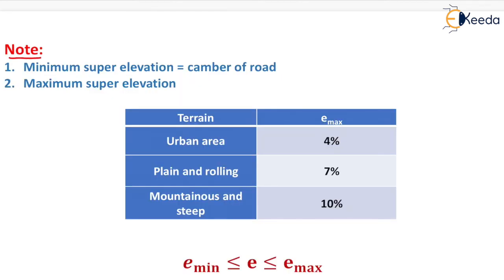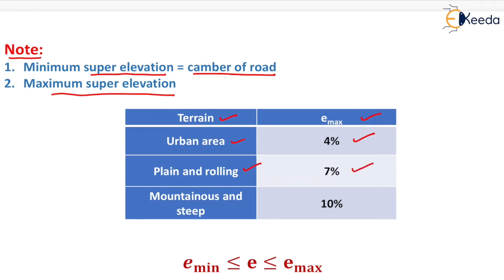The minimum super elevation equals the camber of the road. The maximum super elevation varies by terrain type: for urban areas it is 4%, for plain and rolling terrain it is 7%, and for mountainous and steep terrain it is 10%. The calculated super elevation must be greater than or equal to e minimum and less than or equal to e maximum.